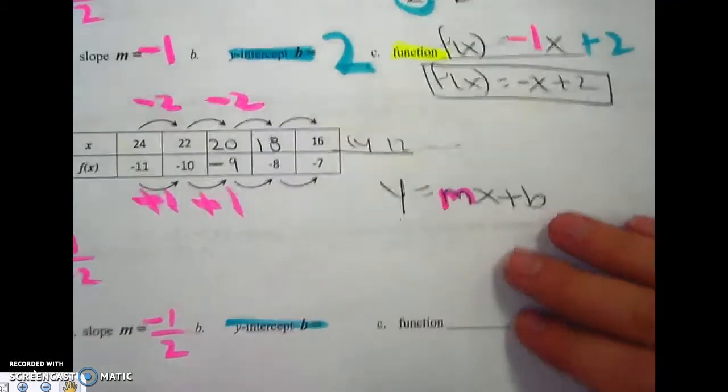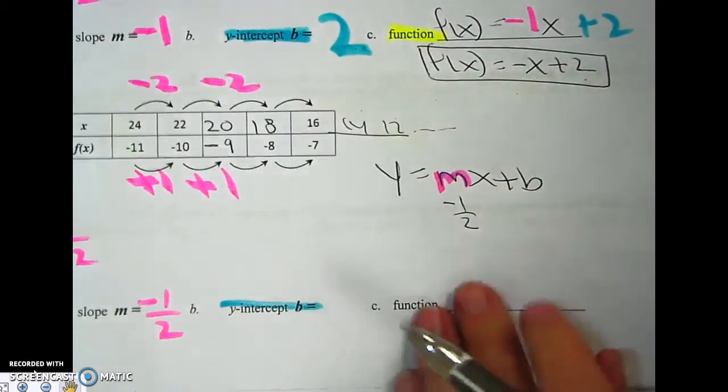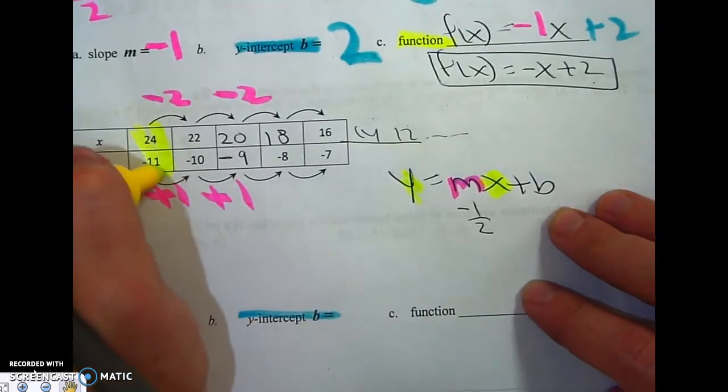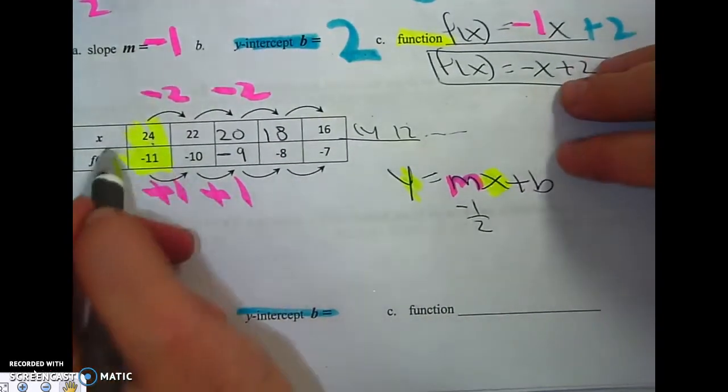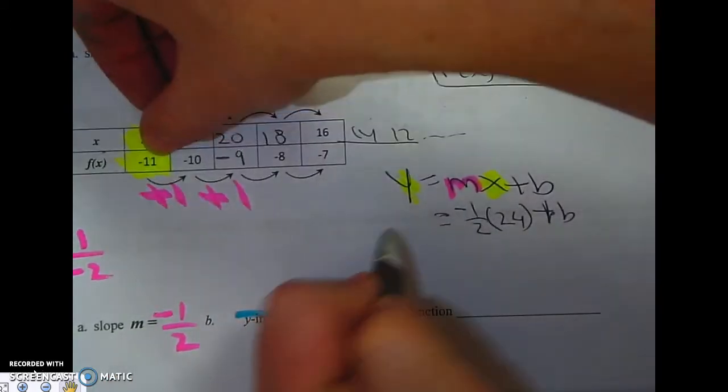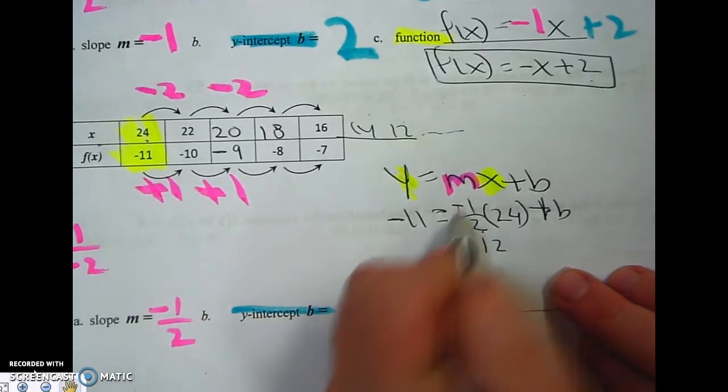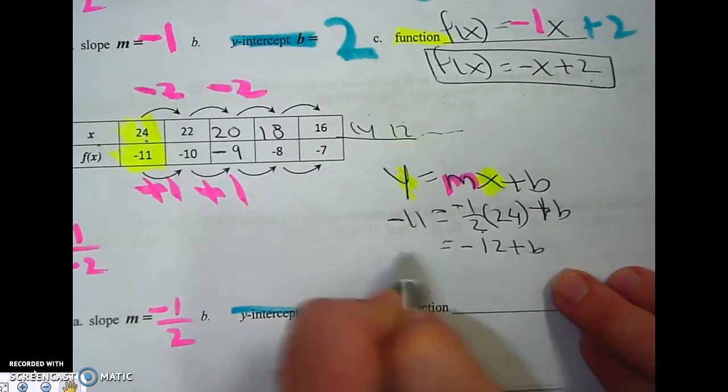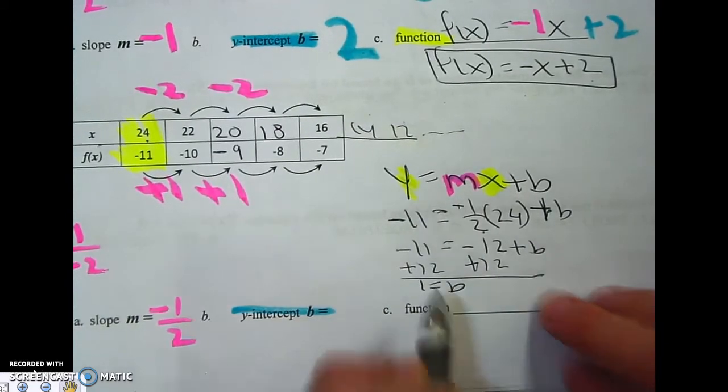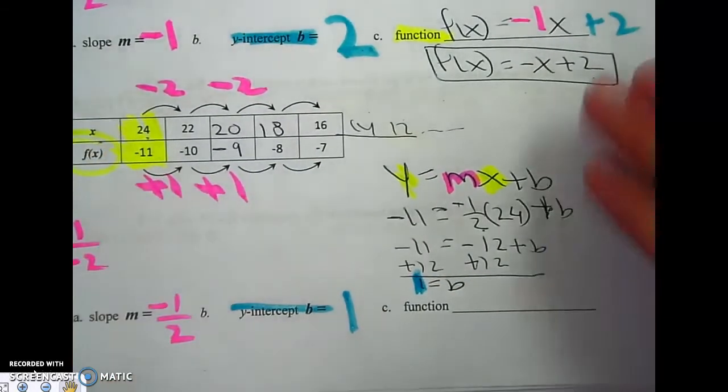My m is right there, negative 1 half. Remember, I like to use the first point. So my x and my y, I'm going to use the first point. So my x is 24. And my y is negative 11. When I'm multiplying by a half, I just take half the number. Half of 24 is 12. That's negative. If this is minus, the opposite is plus. 1 equals b. I got my b. It's 1.